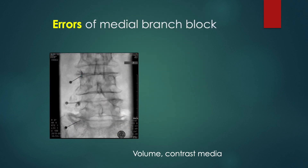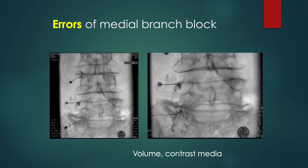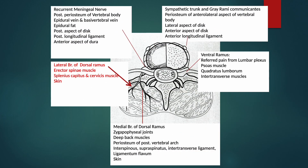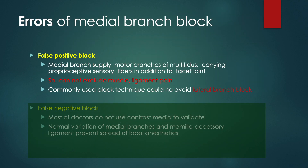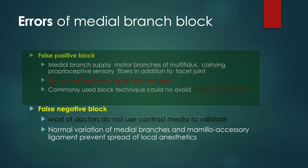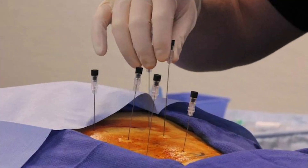But there are possible errors of medial branch block. In clinical practice, most pain physicians use local anesthetics of more than 0.5 mL, which is enough to block the lateral branches. The lateral branch supplies the erector spinal muscle group. So we cannot exclude muscle pain with the medial branch block. Also, many doctors do not use contrast media to exclude vascular leaking, which leads to a false negative result. The therapeutic medial branch block can provide short-term pain relief, but of course the effect is not long-lasting.